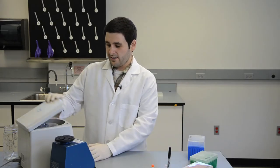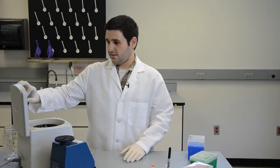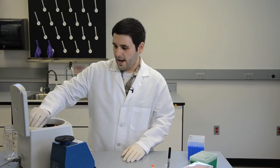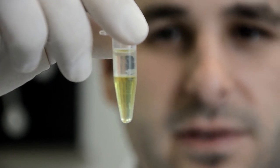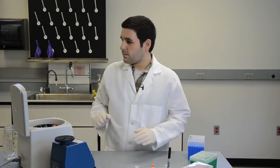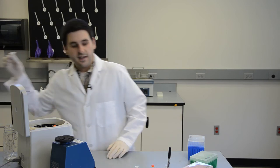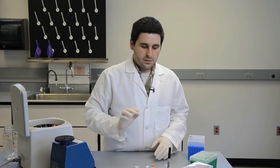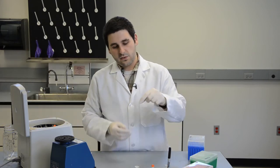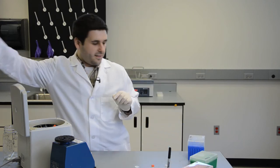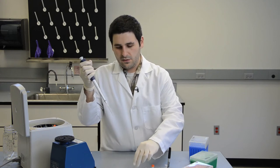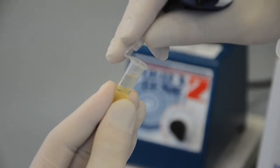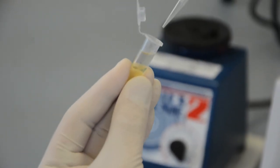Now that our centrifugation is complete, we have two separate layers of DNA and chloroform. Now we want to remove the supernatant and put that in a new two mil collection tube. When you do that, you want to be very careful not to take any of the chloroform with you.